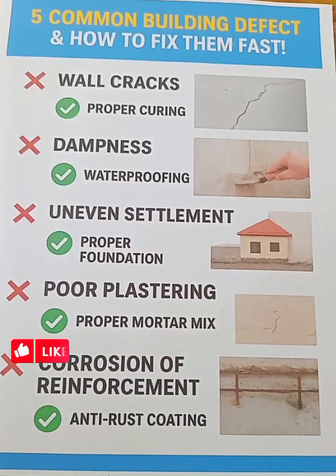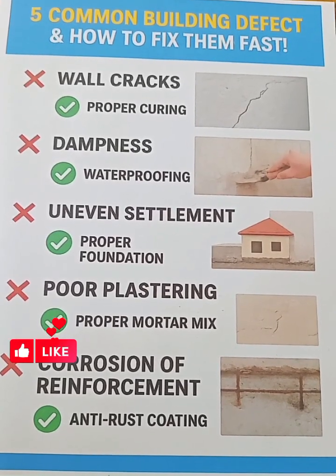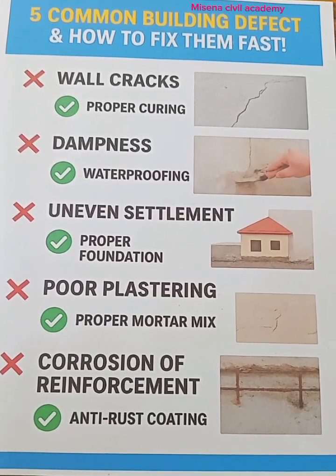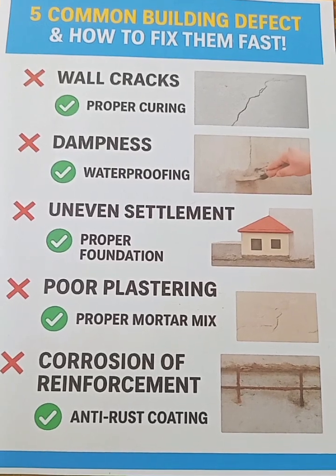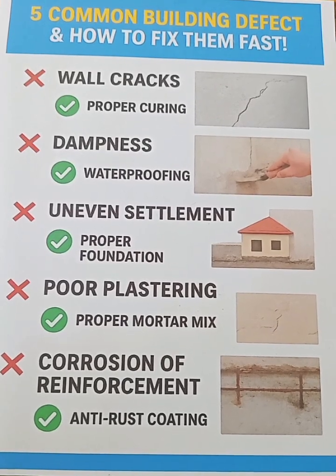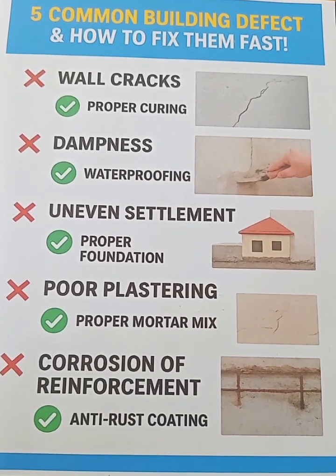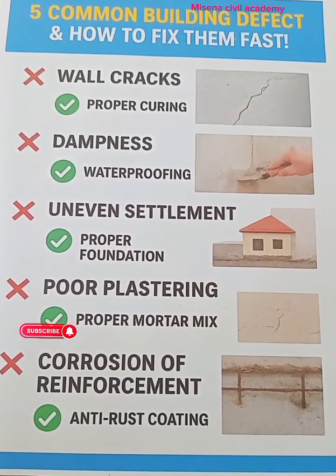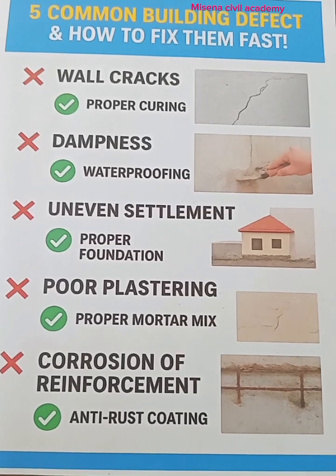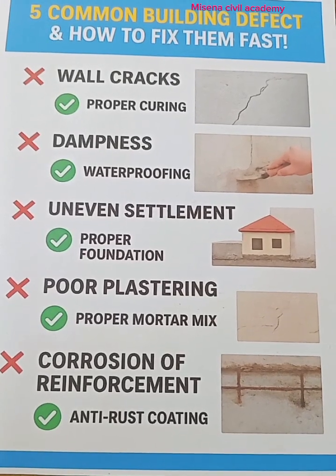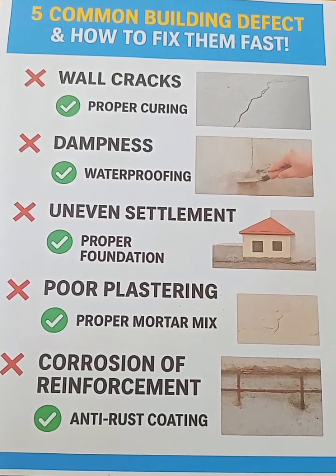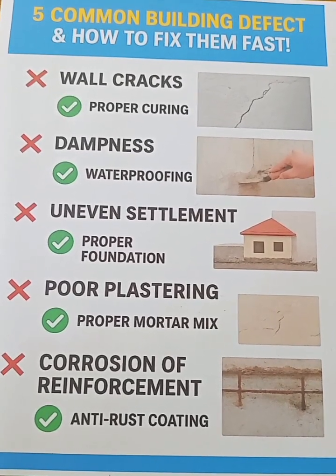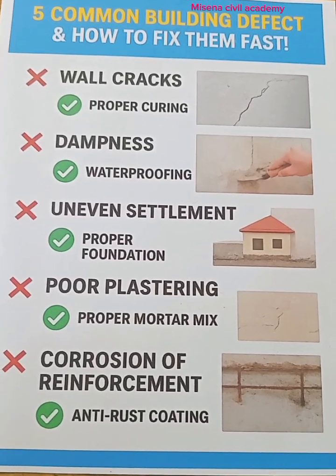Number three: uneven settlement — this can be minimized by proper foundation. Number four: poor plastering — this can be minimized by proper mortar mix. Number five: corrosion of reinforcement — this can be minimized by anti-corrosion coating. Thank you for watching this video. Please like and subscribe for more civil engineering tips.